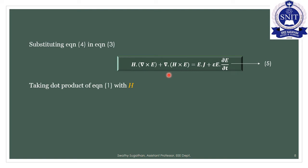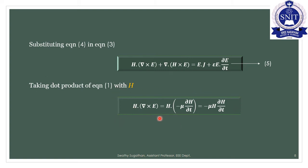Taking the dot product of equation number 1 with H, we put equation number 1 dot product on both LHS and RHS to get equation number 6.